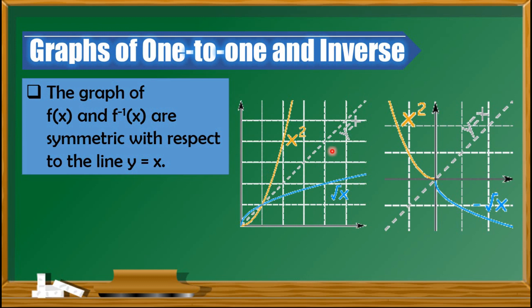When we say symmetrical, one way to check is by checking the points. On this graph, we have a point which represents (4, 2). On the second graph, we should have the inverse of (4, 2), which is (2, 4), which is at this point. And looking at the other graph, these two graphs are also symmetrical with respect to y = x.